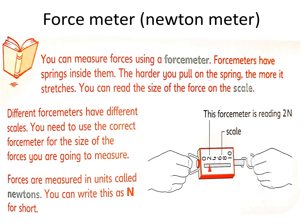Look at this scale on the force meter. There is a scale from 0, 2, 4, 6, 8, 10. I'm going to use my hand to pull it — the force meter reading is 2 Newton. The harder I pull the spring, the more the reading will be. The more it stretches, the larger the force you can read on the scale.